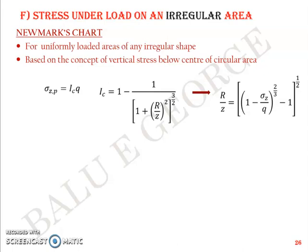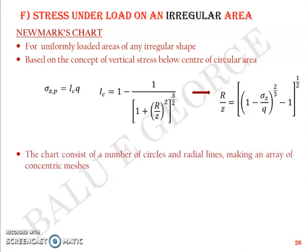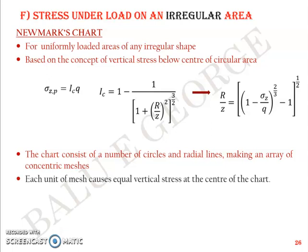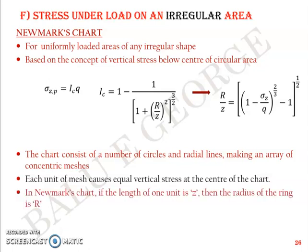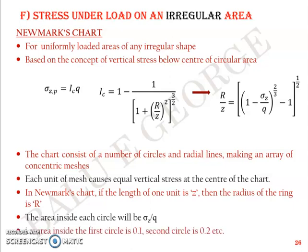Fundamentally, the chart consists of a number of circles and a set of radial lines, creating an array of concentric meshes like a spider's web. Each unit of mesh causes equal vertical stress at the center of the chart. In Newmark's chart, if the length of one unit is z, then the radius of the ring is r. The area inside each circle will be σz/q, meaning the area inside the first circle will be 0.1, the second circle 0.2, etc.